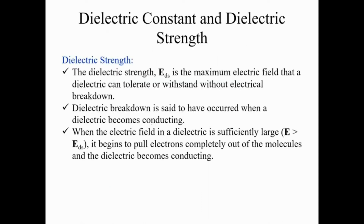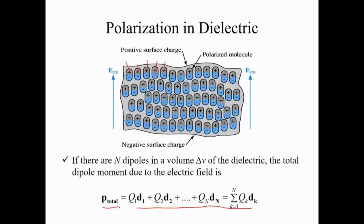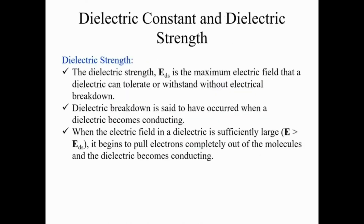Dielectric strength is the maximum electric field a dielectric can tolerate without breaking down. Beyond this value, electrons are pulled completely out of molecules, and the dielectric becomes conducting. That concludes today's content on the relationship between E and V, convection and conduction currents, and dielectric properties. Thank you.